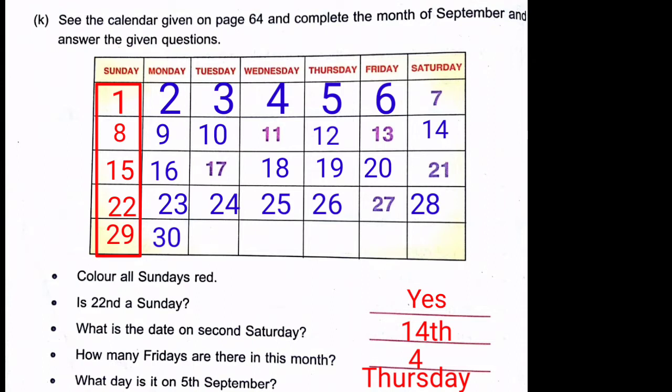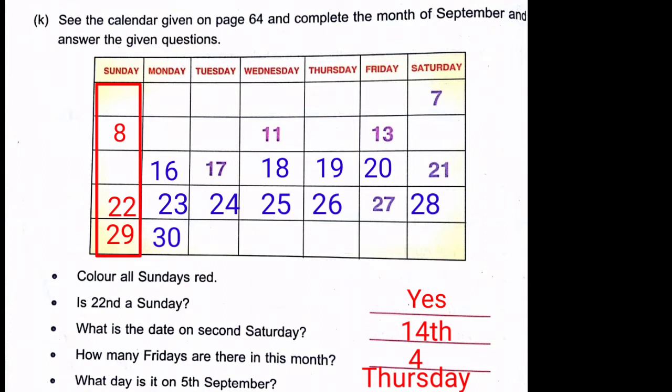The second Saturday is the 14th. How many Fridays are there in the month? The Fridays fall on the 6th, 13th, 20th, and 27th — so there are four Fridays. What day is it on 5th September? That is Thursday.